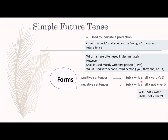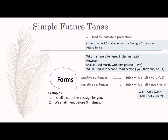Simple future tense is also used with 'going to'. Examples: 'I shall dictate the passage for you.' 'We shall meet before Christmas.' 'Will you post this letter?' — and the answer would be 'Yes, I shall.' If someone else asks you, the correct response uses 'shall' for first person. 'He will wait here till you come.'